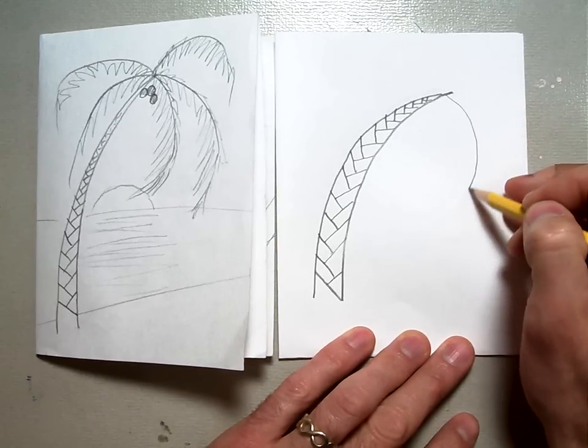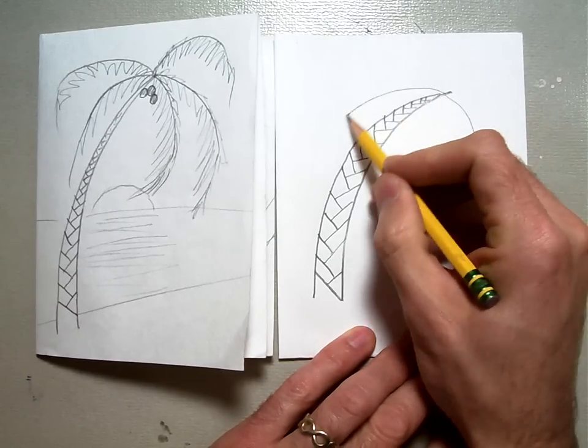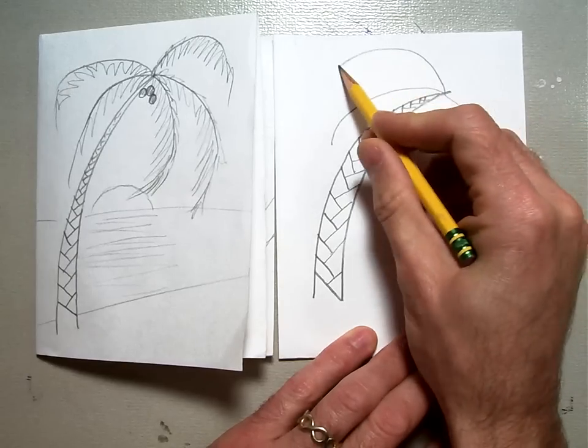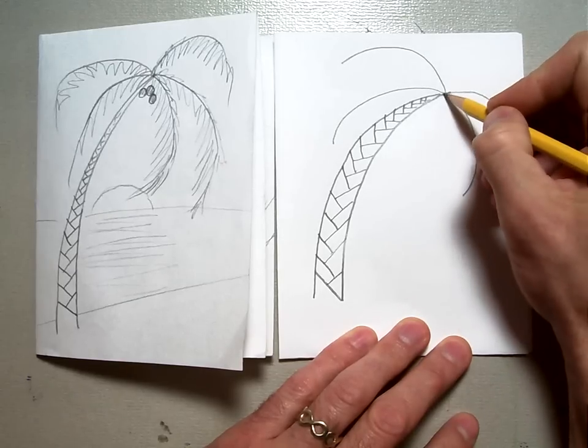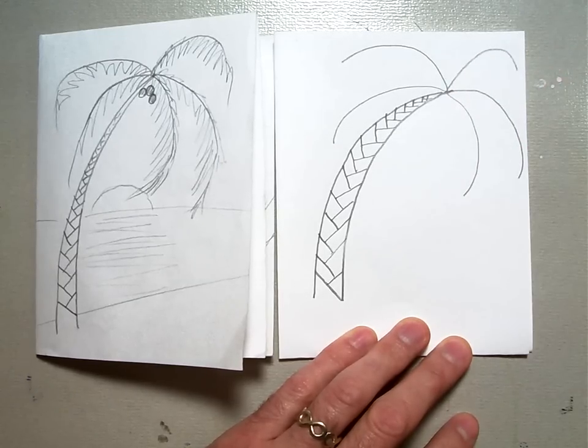I'm going to do one curved this way, another curved back this way, one curved kind of up that way, one down here, and then one kind of up and in the middle.